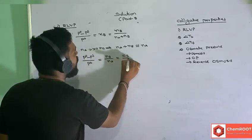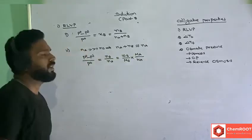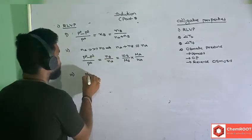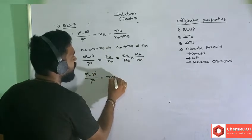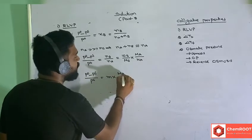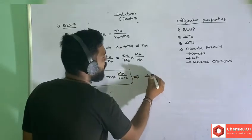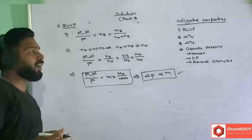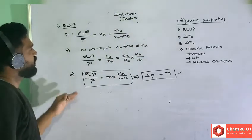That expression equals (W_B/M_B) · (M_A/W_A). To express this with respect to molality, we divide and multiply by 1000, giving molality · (M_A/1000). So relative lowering of vapor pressure is directly proportional to molality. This relationship will also be useful in deriving expressions for ΔT_b and ΔT_f.